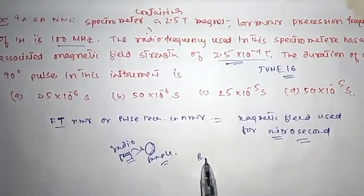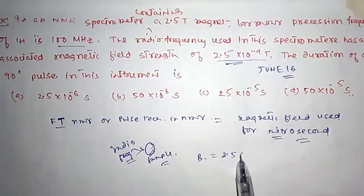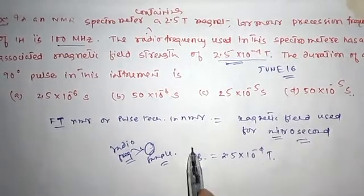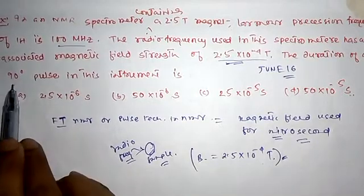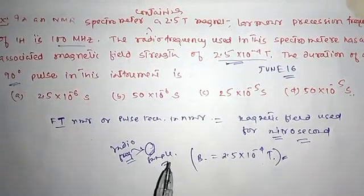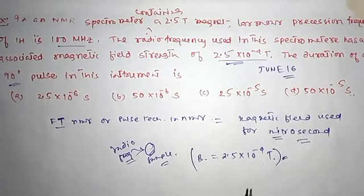So here the strength of the magnetic radio frequency is 2.5 × 10^-4 Tesla for some microseconds. We are supposed to find out the pulse duration of the excitation.